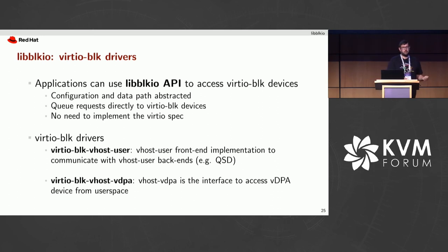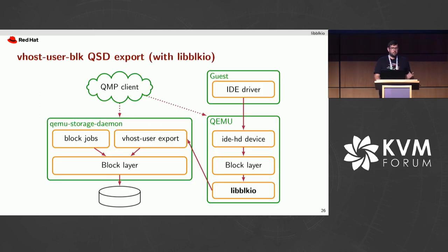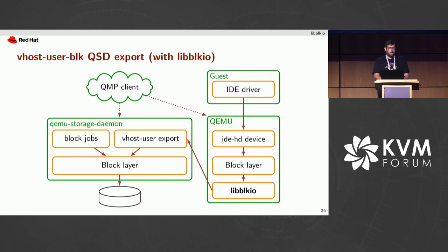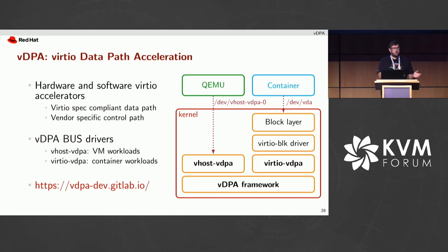So libblk-io — the application can use the libblk-io API to access virtual block devices. The configuration and data path are completely abstracted by the library, which allocates the virtqueues, so every request queued through the libblk-io API is directly queued into the virtual block device. Applications do not need to implement the virtio-blk driver themselves. libblk-io supports several transports: a virtio-blk vhost-user driver implementing vhost-user front-end to communicate with the vhost-user back-end like the QEMU Storage Daemon, and a virtio-blk vhost-vdpa driver to access VDPA devices using the vhost-vdpa interface.